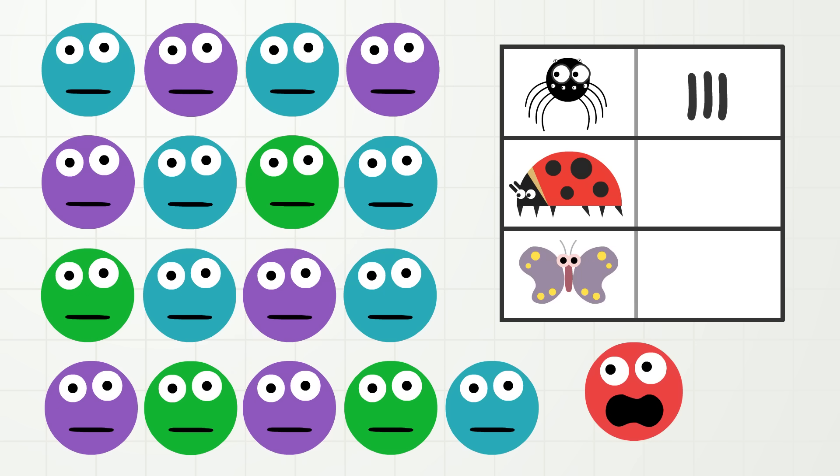Now, raise your hands if you like butterflies the best. Let's count. One, two, three, four, five. So, five brothers and sisters like ladybugs the best.